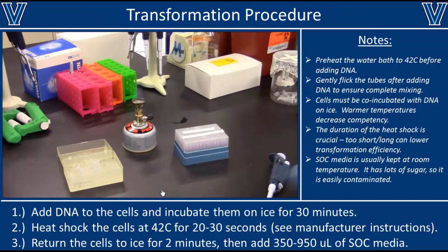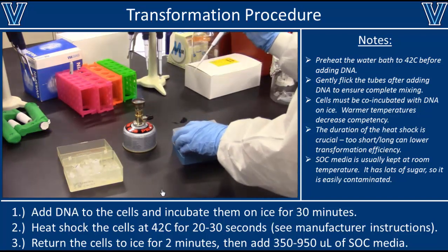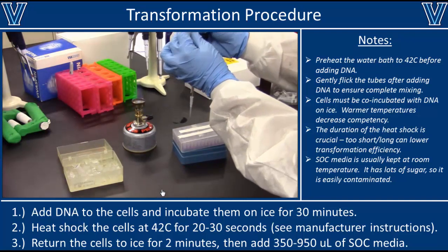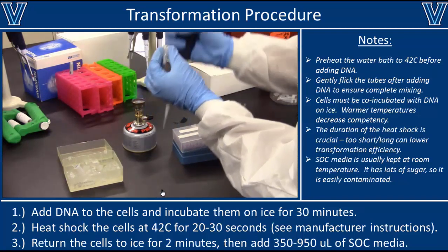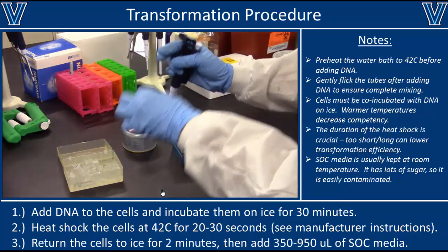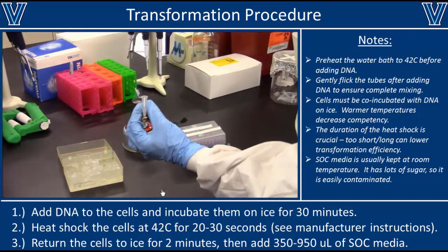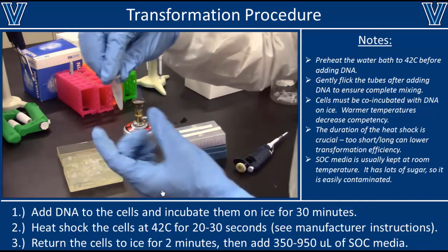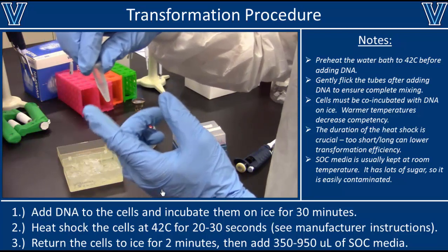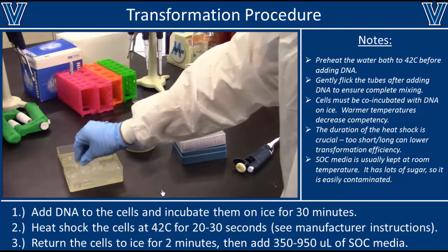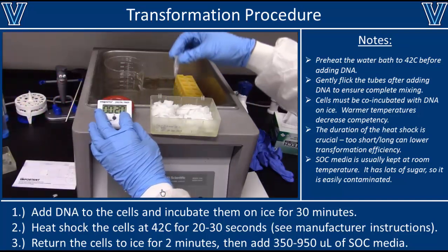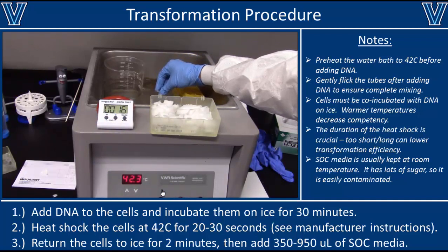In this video we're going to transform one aliquot of cells with a freshly ligated plasmid. When using a ligation reaction, add 5 microliters of the ligation mix to 50 microliters of cells. However, if transforming with an intact plasmid, use only 10 to 50 nanograms of DNA — you don't want to add too much DNA or the cells will overgrow the plate and become unusable. Once you've added the DNA, incubate on ice for 30 minutes, then heat shock at 42 degrees Celsius for 20 seconds. Some strains require a heat shock of 30 seconds — check the manufacturer's instructions for the correct time and temperature.